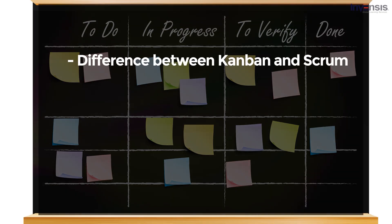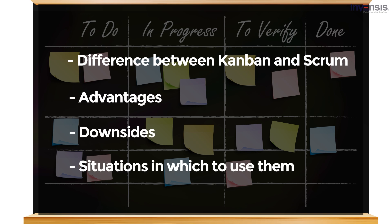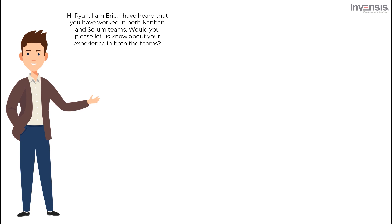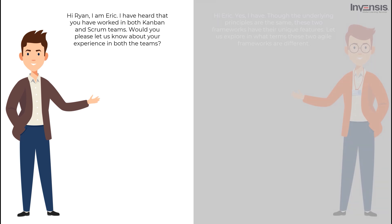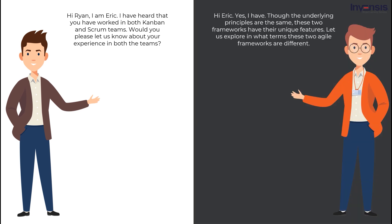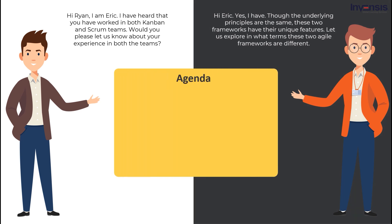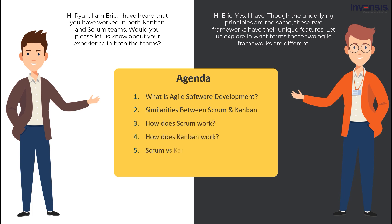In this session, we will discuss the difference between Kanban and Scrum, their advantages, downsides, and situations in which to use them. We will begin by discussing what exactly Agile software development is. Then we will talk about how the Scrum framework works. Similarly, we will learn how Kanban works. After that, we will discuss the key differences between Kanban and Scrum and situations in which to use them. Finally, we will conclude this session by summarizing what we have learned about Scrum and Kanban.